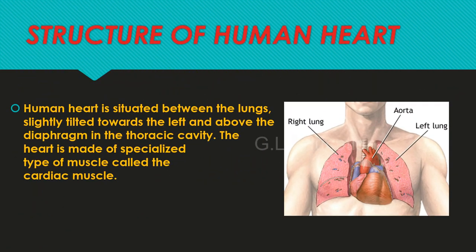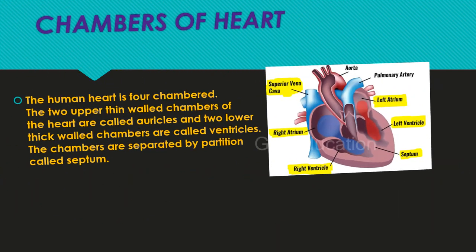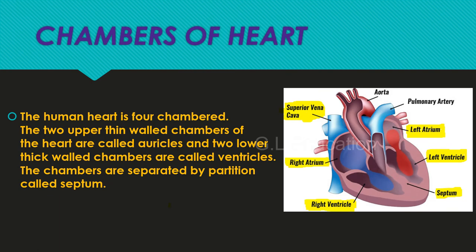Structure of human heart: the human heart is situated between the lungs, slightly tilted towards the left and above the diaphragm in the thoracic cavity. The heart is made of a specialized type of muscle called the cardiac muscle.